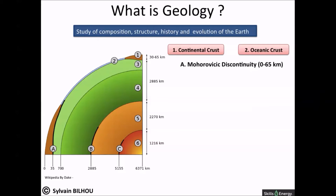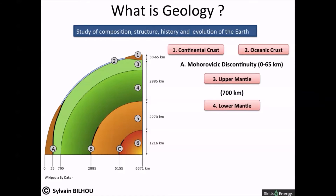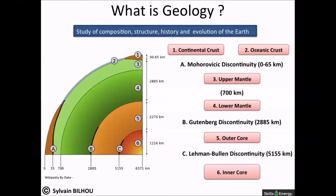The mantle is divided into the upper and the lower mantle. The mantle is separated from the Earth's core by the Gutenberg discontinuity. The outer core is liquid and the inner core is solid. They are separated by the Lehmann discontinuity.